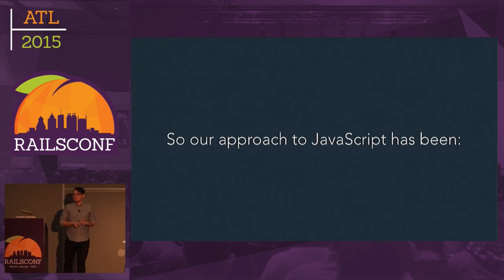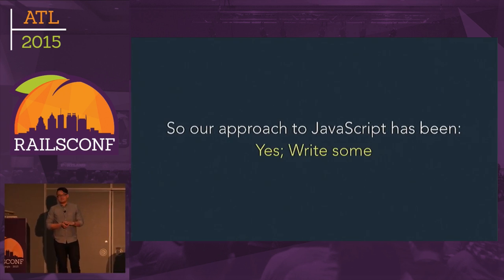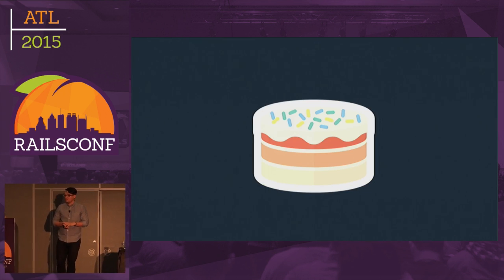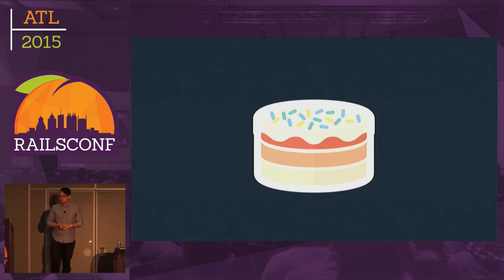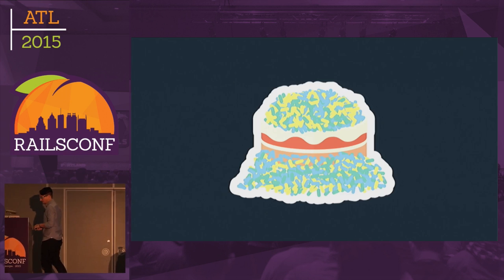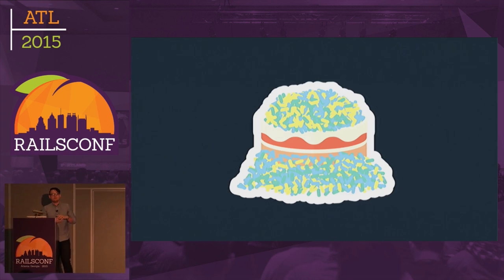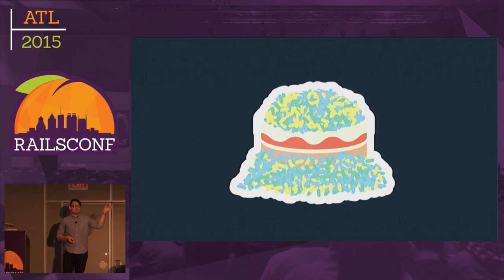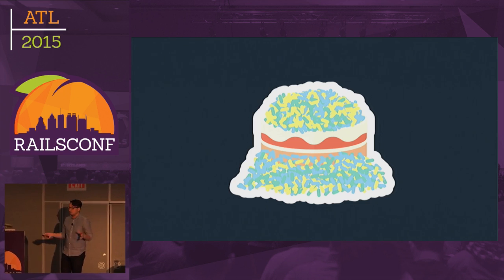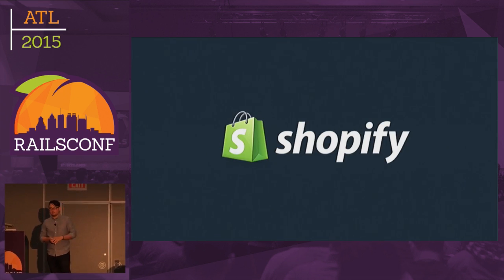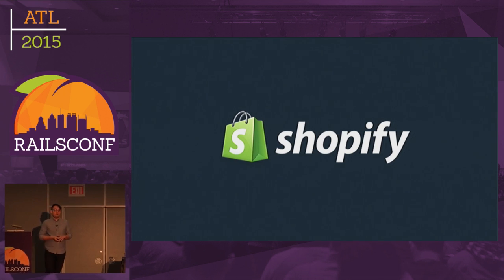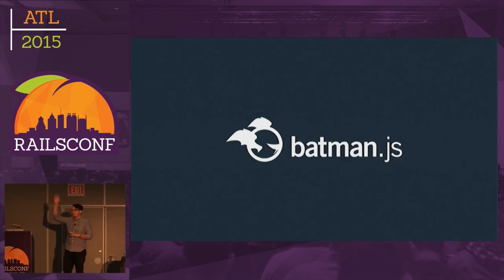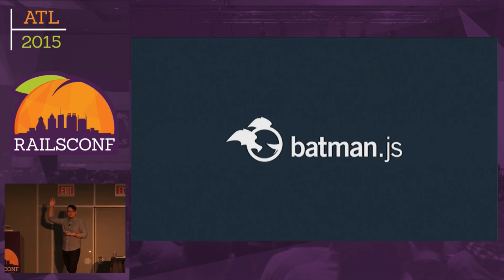It started in 2006, so our approach to JavaScript has kind of been: yes, write it. And as you know, after a little bit of time, sprinkles tend to turn into mountains. So we needed a way to better structure our JavaScript applications. In 2012, when we were writing our second app, we started to look at the landscape and see what people were doing. We looked at bigger Rails shops — we looked at Shopify, and they were just starting to work on a project called Batman.js. Has anyone in here used Batman.js?